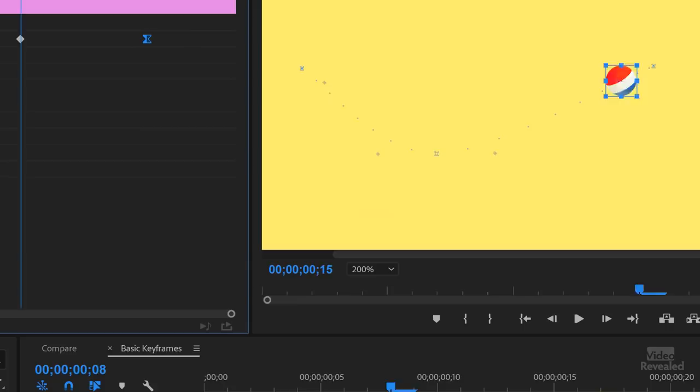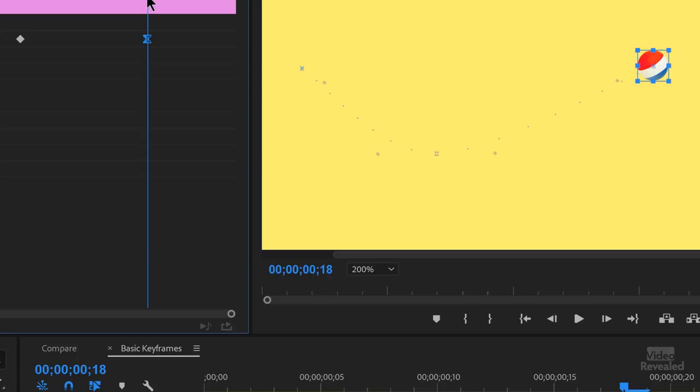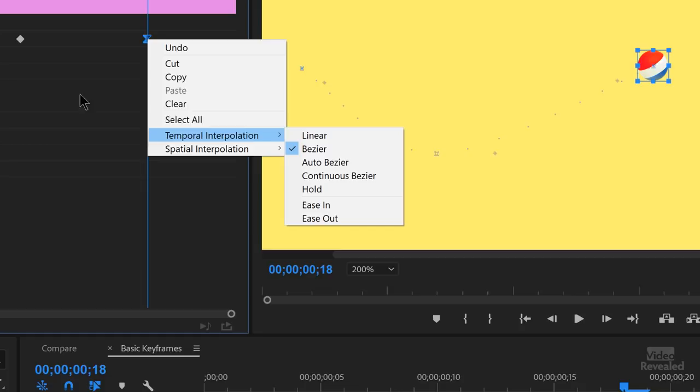Now we do have those different ones. We have hold, ease in, ease out. I'll just show you hold for instance. So if we change this middle one to hold, it's going to wait. So there's no animation because that keyframe is hold. It waits till the next one and then it moves. Hold keyframe is useful if you want something to jump positions.